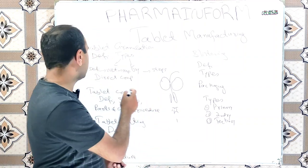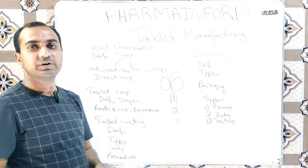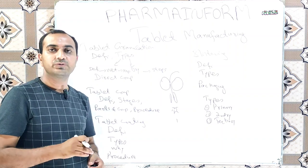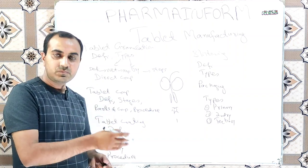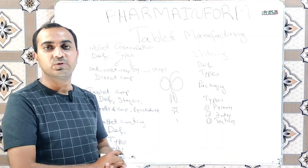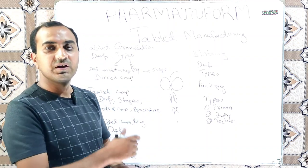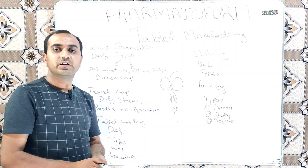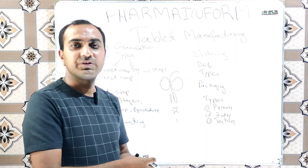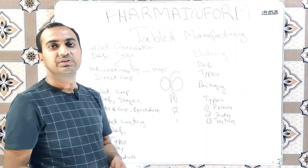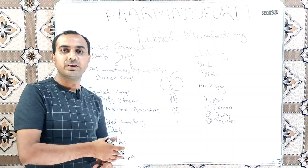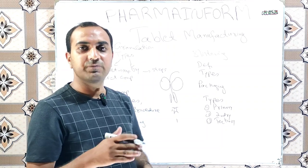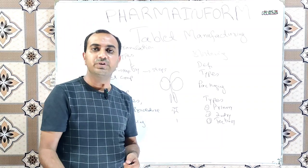Now let's move towards tablet compression. The process in which powders or granules are converted into tablets by application of pressure is known as tablet compression. A compression machine is used for this purpose. There are two types of compression machines: single punch compression machines, used in labs, and rotary compression machines, used on large scale. Rotary compression machines are basically of two types: single feed and double feed.